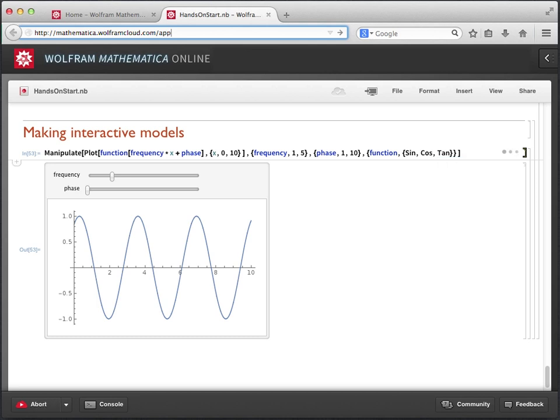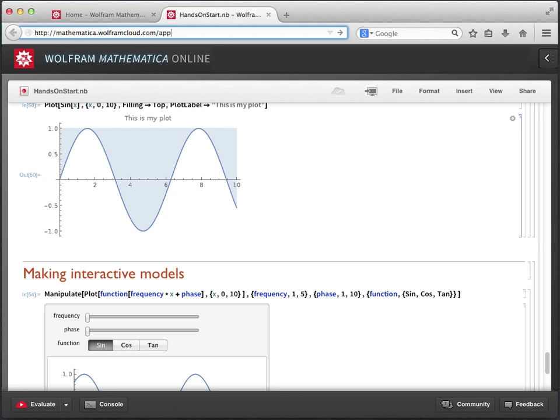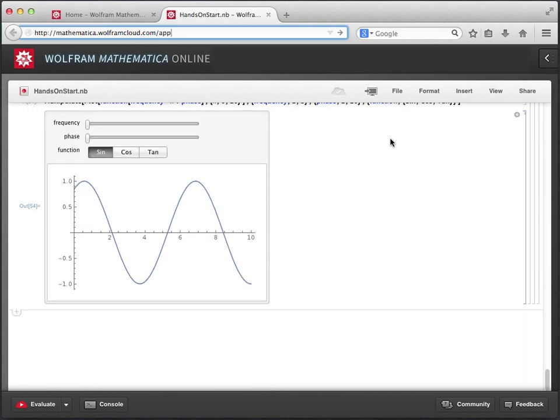Once we evaluate, we will see that our model lets us change frequency and phase using sliders, and we now have a new row of buttons that can be clicked to toggle between different functions to graph. Not bad for a beginner.